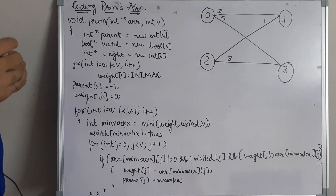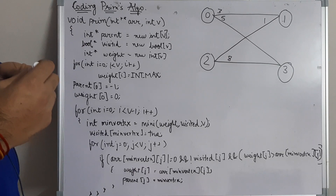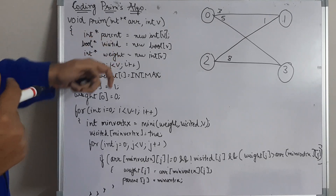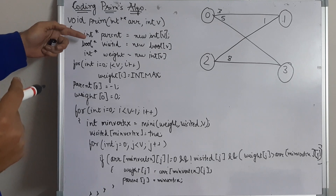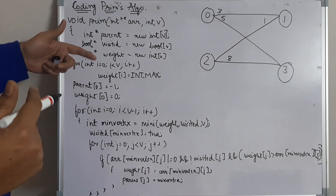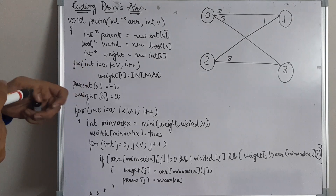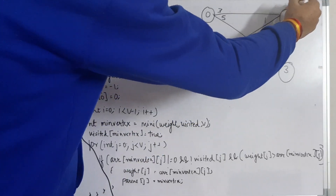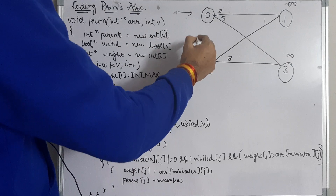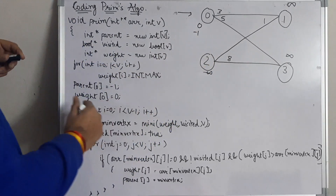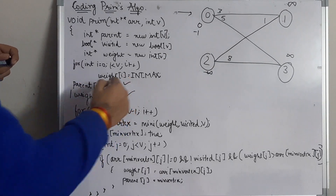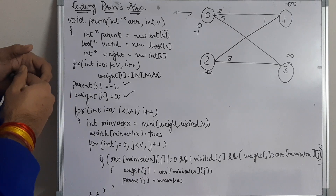Prim's algorithm requires three parameters: parent, visited, and weight. We compute an integer array for parent allocated dynamically, a boolean array for visited to track whether a node is visited, and a weight array to store the computed weight of each node. We initialize all weights to INT_MAX (treated as infinity), and for the source node (vertex 0) we set weight to 0 and parent to -1.